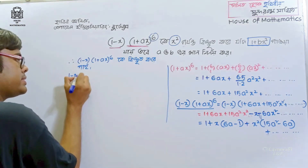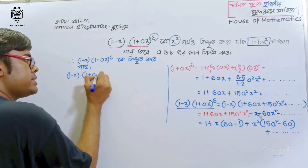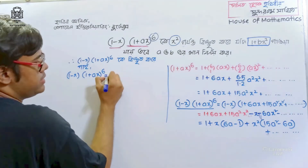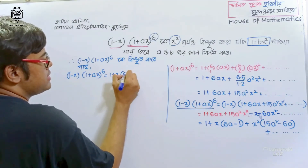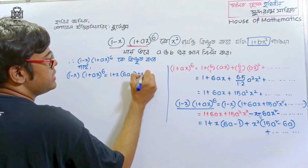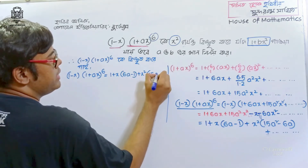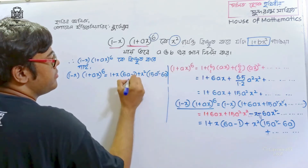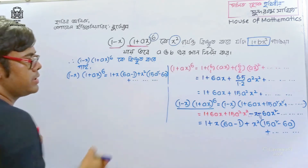So, 1 minus x into 1 plus x to the power 6 is equal to 1 plus x times 6a minus 1, plus x squared times 15a squared minus 6a, plus dot dot dot.